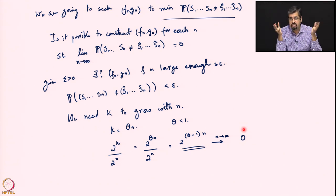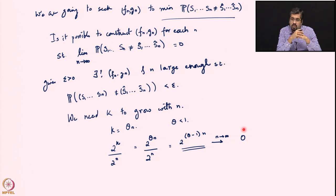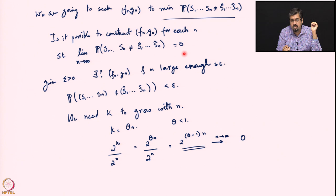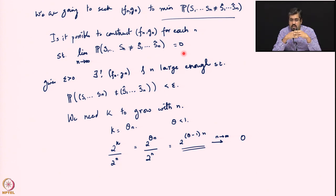Since θ is less than 1, this fraction goes to 0, which means the fraction of symbols you can recover actually vanishes. So you can recover a very tiny fraction of the total number of source symbols. But we still want the probability of error to be going to 0, while at the same time being bound by the requirement that the number of sequences being recovered is very small.